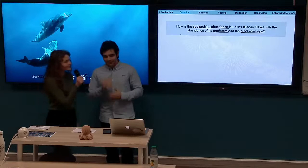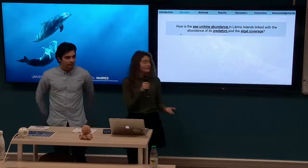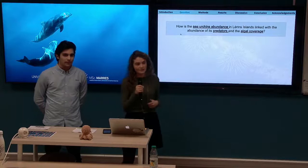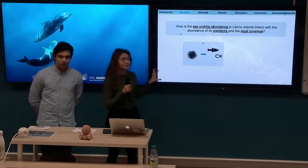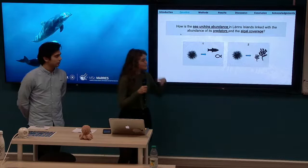The aim of our study was to explore the relationship between the abundance of sea urchins, the abundance of their predators, and the algal coverage. We addressed this through two specific questions: first, looking at the relationship between sea urchin abundance and that of its fish predators, and second, the relationship between sea urchins and algal coverage.